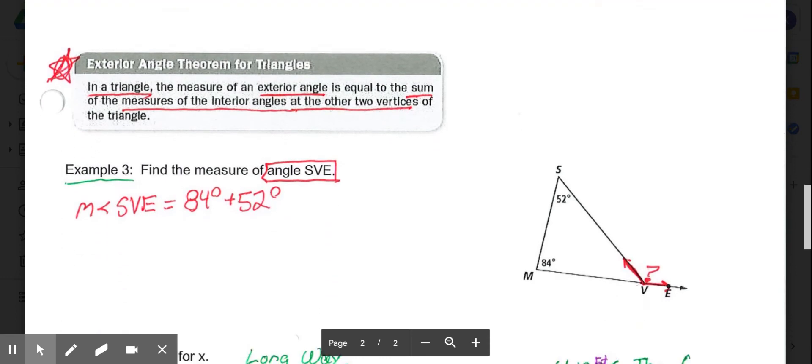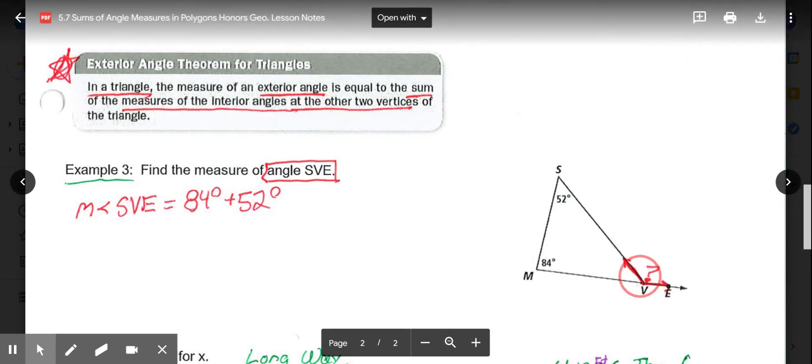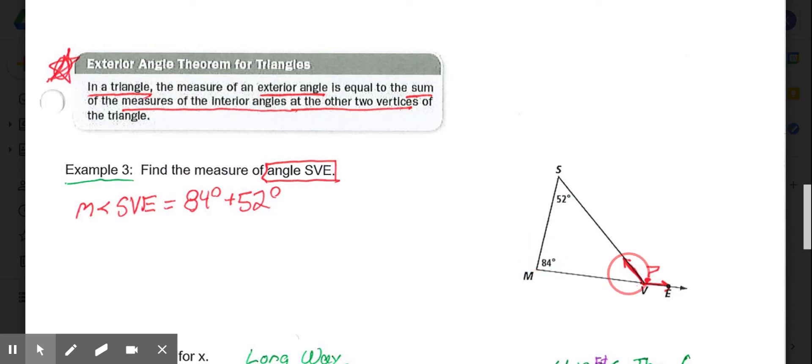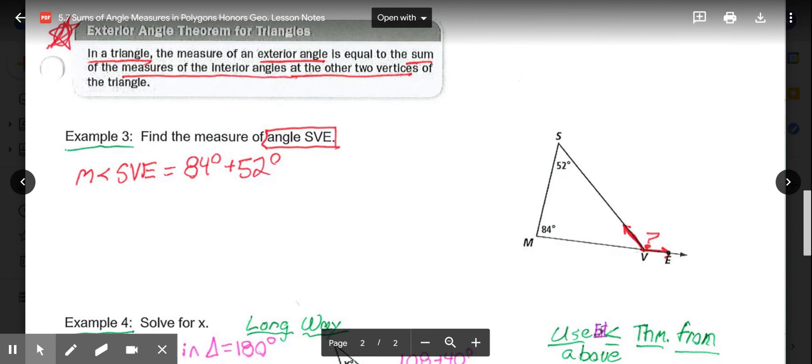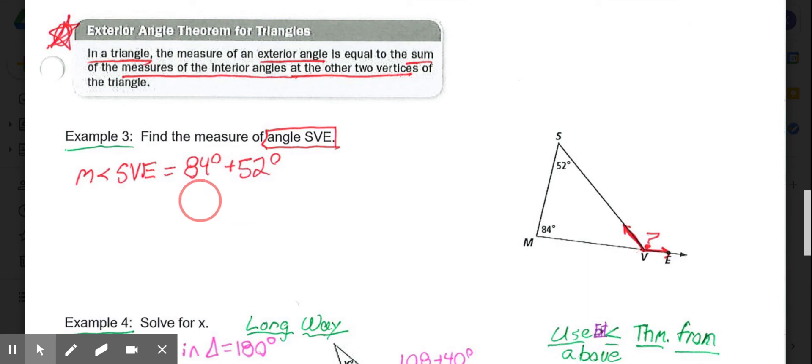And then we get to our exterior angle theorem for triangles, which says, in a triangle, the measure of an exterior angle is equal to the sum of the measures of the two interior angles whose vertices do not touch that exterior angle. In this case, if we're looking at angle V here, this exterior angle would equal the two interior angles added together that do not touch angle V, so the 84 plus 52. 84 plus 52 is the measure of angle SVE on the exterior here, which would give us 136 degrees.